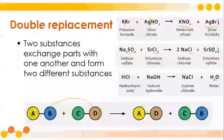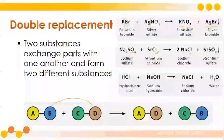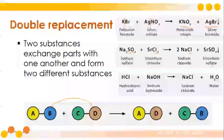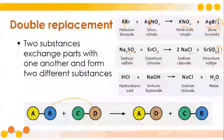Hydrochloric acid and sodium hydroxide will produce NaCl (sodium chloride) and water. Arrows pointing down indicate that there is a solid produced — meaning there's a precipitate.